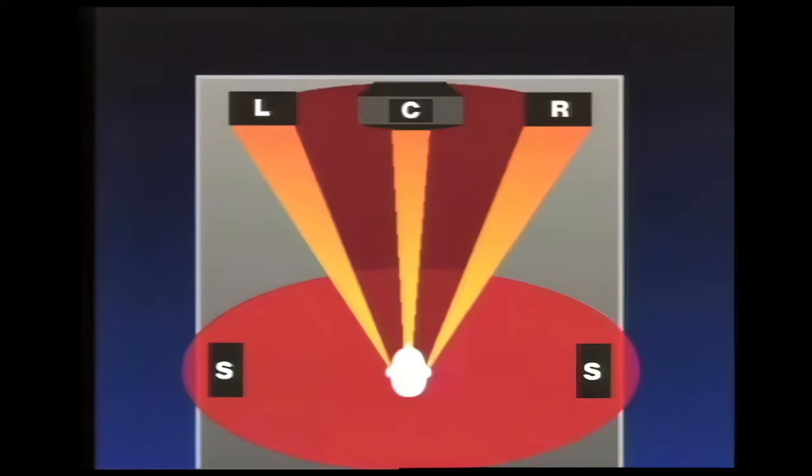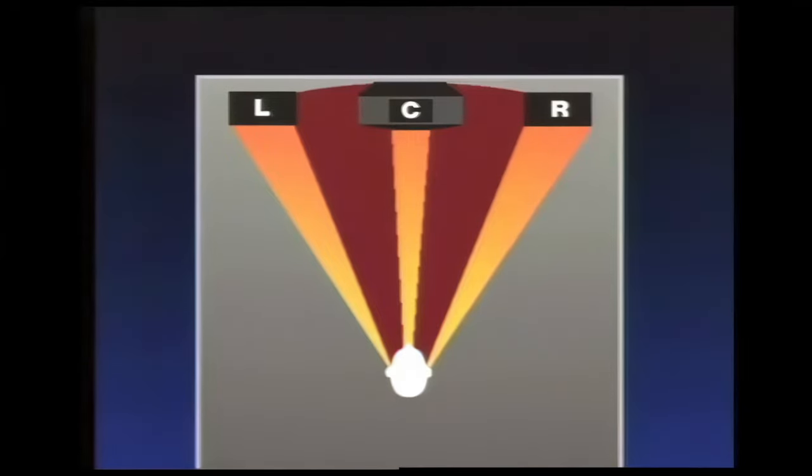ProLogic decoding proves that three front channels can provide excellent stereophonic dimensionality with precise sound localization over the viewing area. However, not all programs are recorded in Dolby Surround and not everyone is interested in a home theater, certainly not for every TV in the house. Many television viewers simply want the best stereo sound possible. Dolby 3 Stereo solves this by using modified ProLogic processing in a three-channel format, left, right and center.